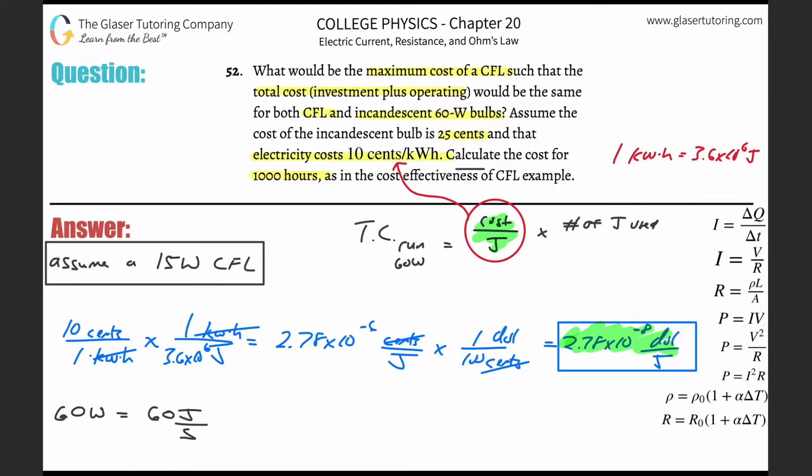Now the question is, how many seconds are we going to run the bulb? Well, it said calculate the cost for a thousand hours. So we're going to run it for a thousand hours. So what I need to do is, instead of having seconds on the bottom, I need hours. Because if I can figure out the joules per hour, then what I can do is just multiply it by those 1000 hours. So I'm going to convert this into seconds to hours, and I know that there's 3600 seconds in one hour.